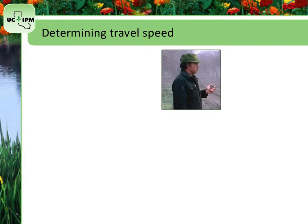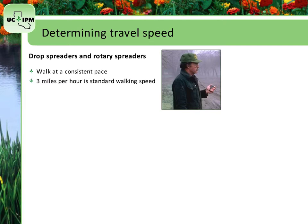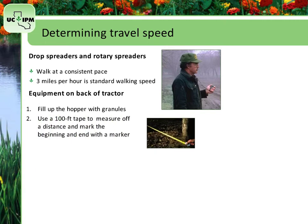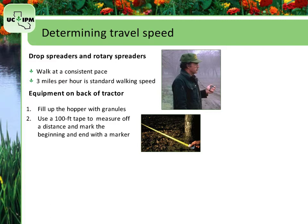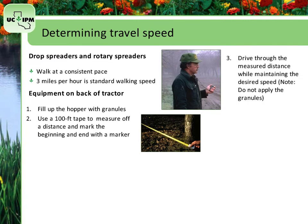Let's start with the travel speed. For drop spreaders and rotary spreaders hand-pushed or held at the chest, walk at a consistent pace the entire time you operate the equipment. Three miles per hour is standard walking speed when pushing a spreader. Determine the travel speed for equipment placed on the back of a tractor in feet per minute. Fill up the applicator's hopper with the pesticide granules so that you can measure the speed under actual operating weight. Use a 100-foot tape to measure off a convenient distance, such as 200 or 300 feet. Mark the beginning and end with a marker, such as red flagging tape. Have someone drive the equipment through the measured distance while maintaining the desired speed. Do not apply the granules at this step. Begin driving before crossing the start marker so you can be sure you've reached your desired speed by the time you start your measurements.